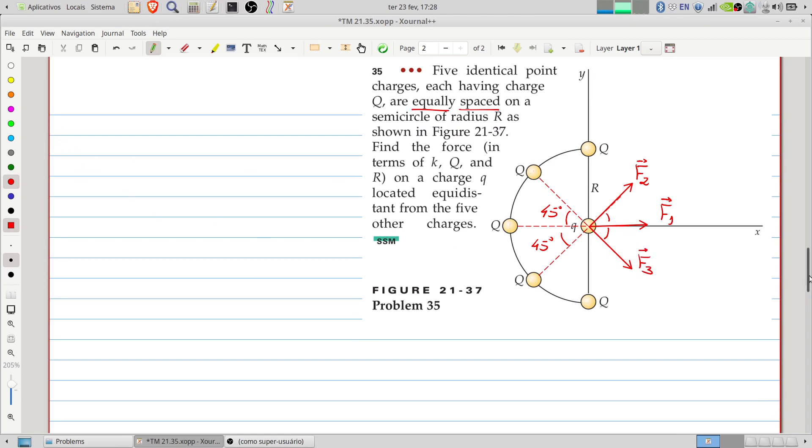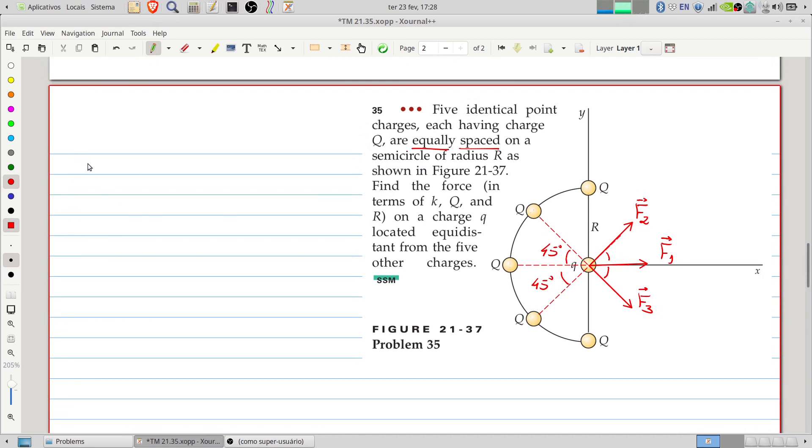And of course, what we want to know is the sum of these forces. So, the result of this force will be F equals F1 plus F2 cosine of 45 plus F3 cosine of 45 degrees. And this force will be in the horizontal direction.